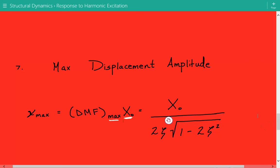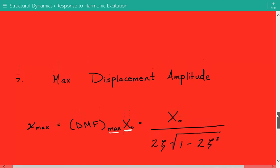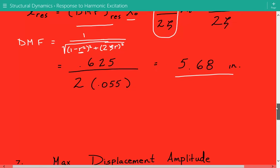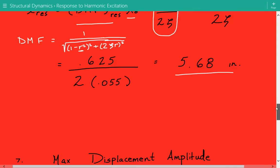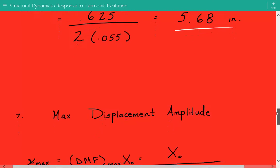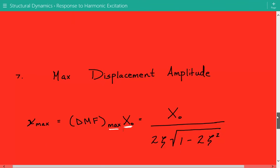This DMF max, again, we're not going to use the regular equation of the dynamic magnification factor because we don't know r. The reason we don't know r is because we don't know the excitation frequency, the frequency of the harmonic force.